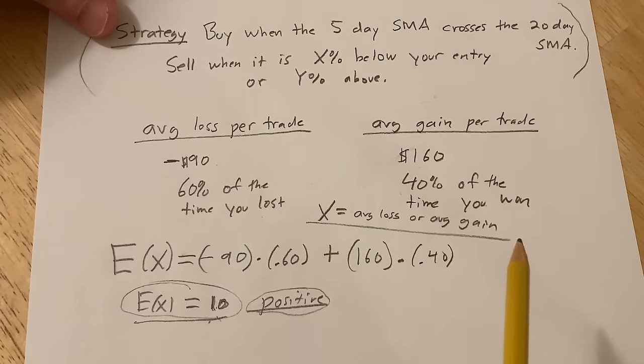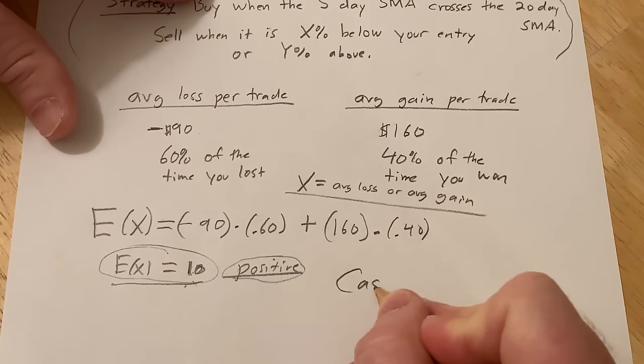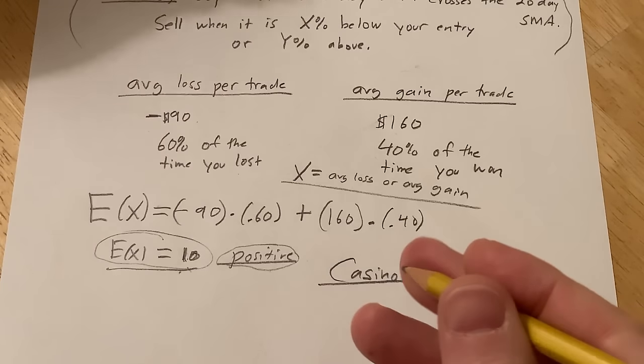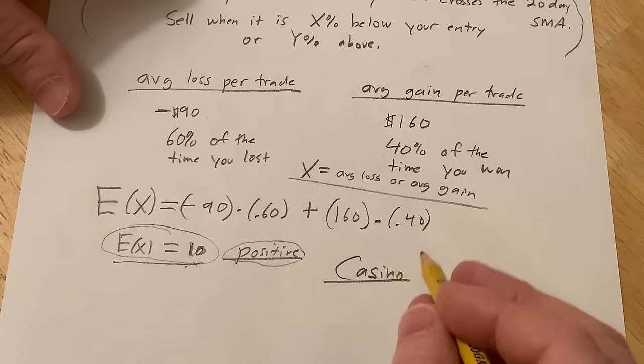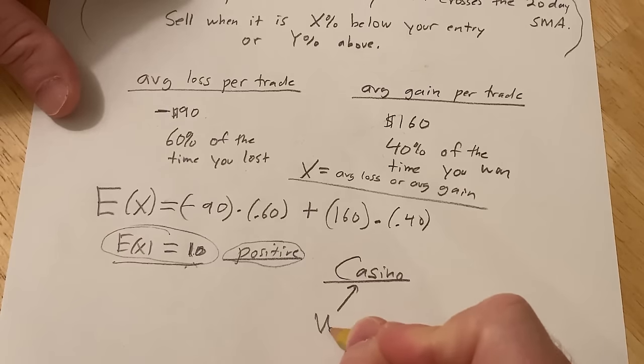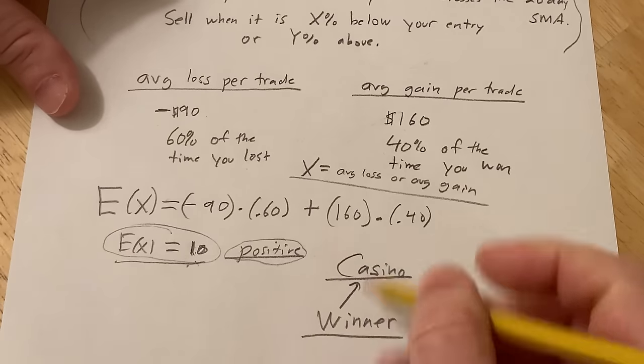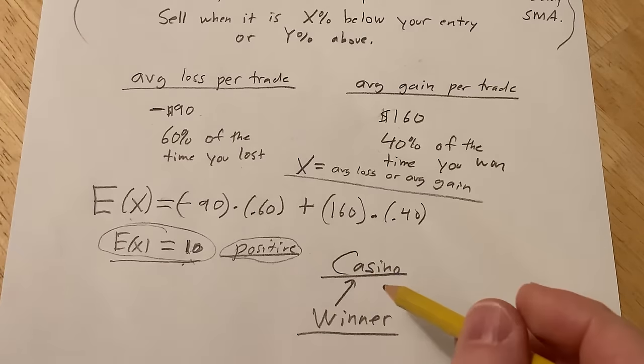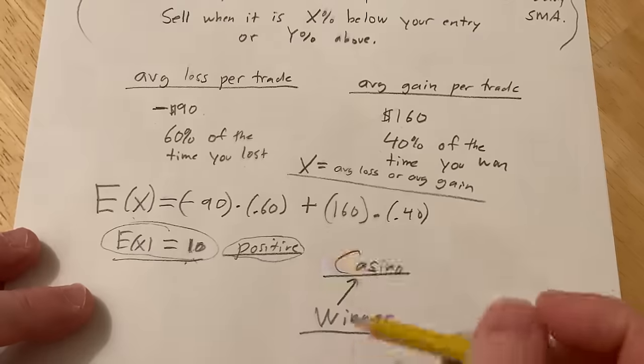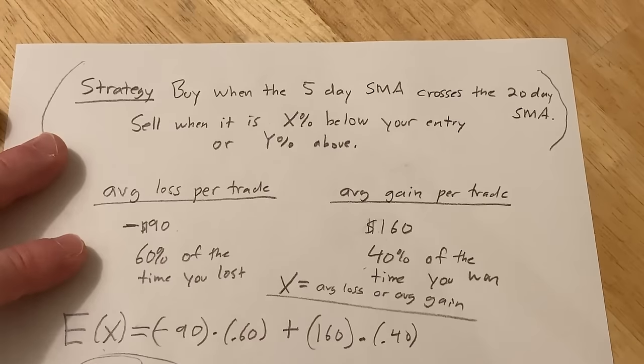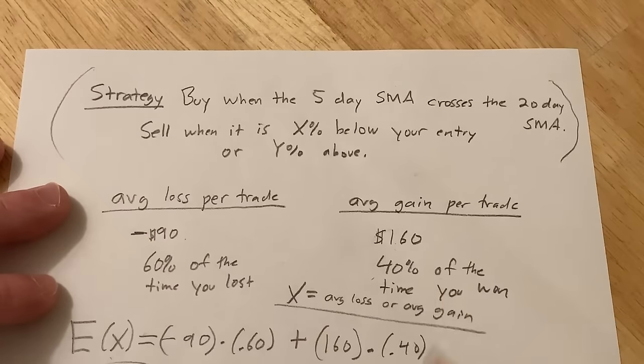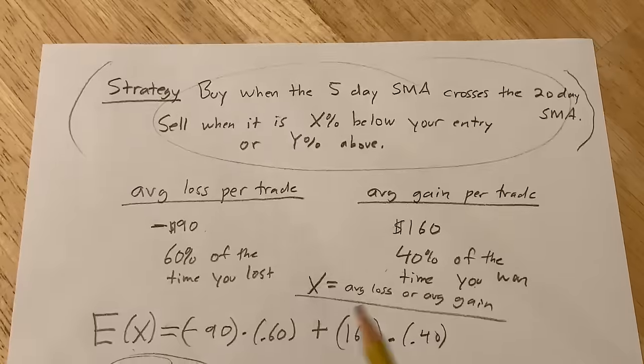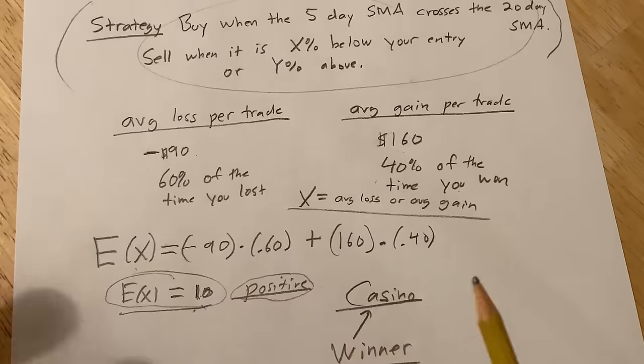A good example of this also is casino games. If you go to a casino, all the casino games have a negative expected value for you as the player. So in general, the casino is going to be the winner in the long run. And that's how casinos stay in business, because all of the casino games have negative expected values to you as the player. So just thought I would show you how, in theory, you could use math to analyze a trading system and determine if it's going to be a winning system or a bad system.